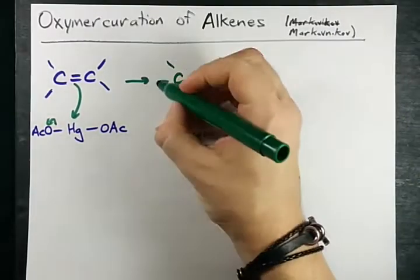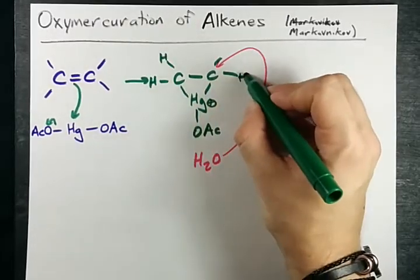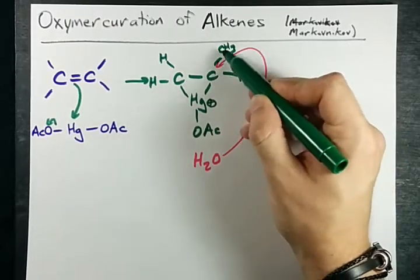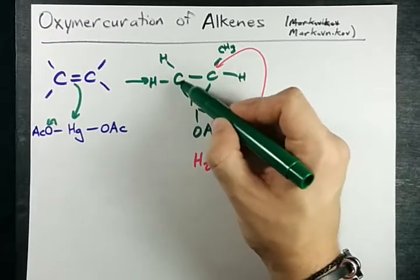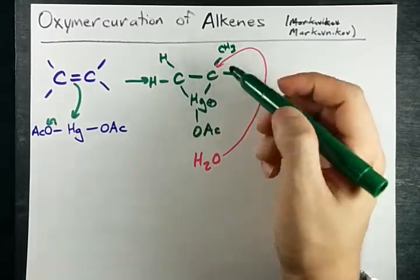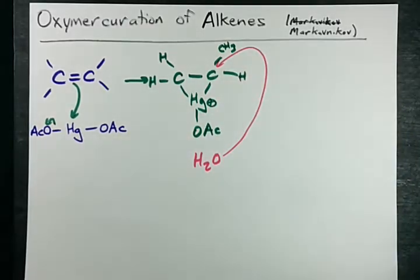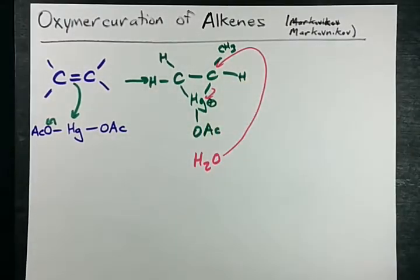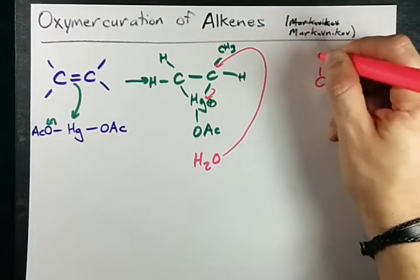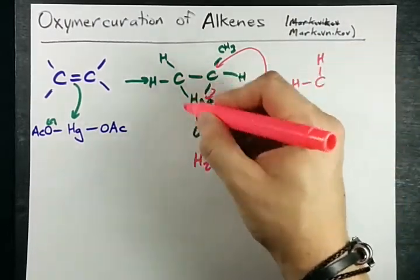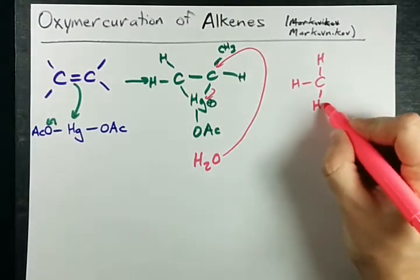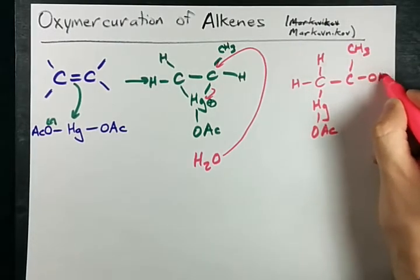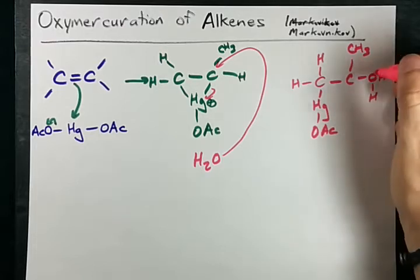Let me add some substituents here. Let's say that this had two hydrogens, and this had a hydrogen and a CH₃. This carbon is more substituted — it's a secondary carbon — whereas this is just a primary carbon, connected to only one other. So the H₂O attacks that secondary carbon, and the electrons from the C–Hg bond end up going to the Hg. That results in no more fancy rings or double bonds. We simply have Hg connected to an OAc on this carbon, and a CH₃ with an OH.